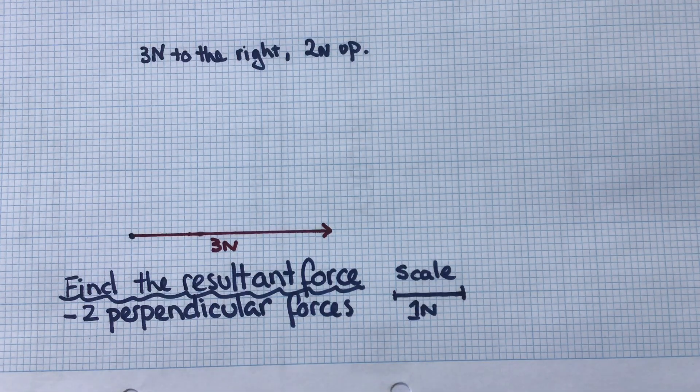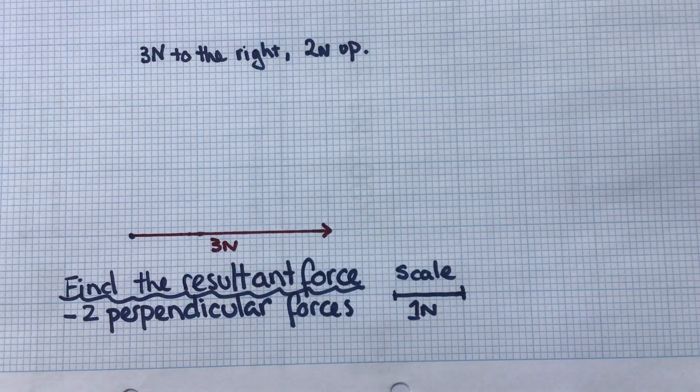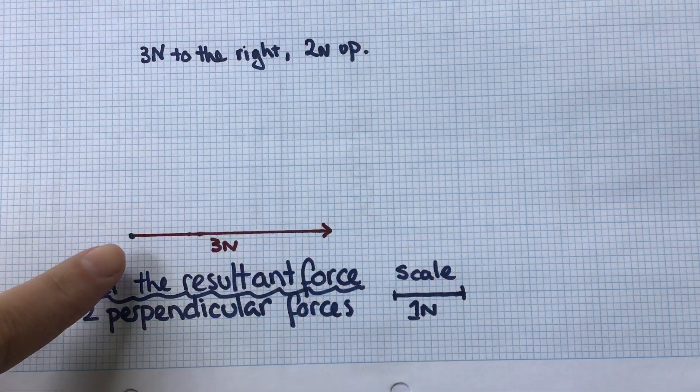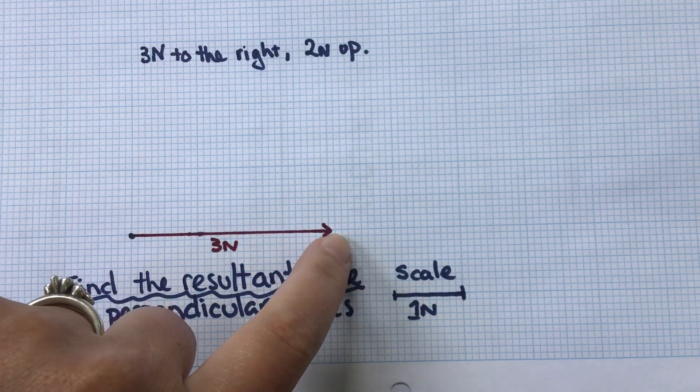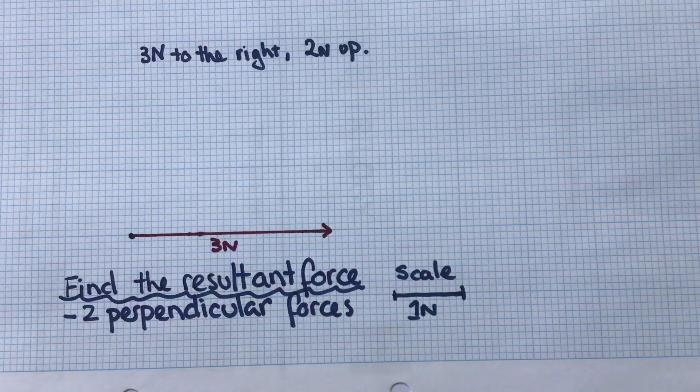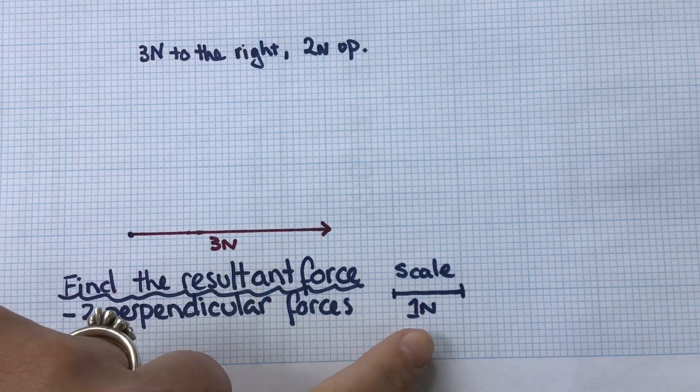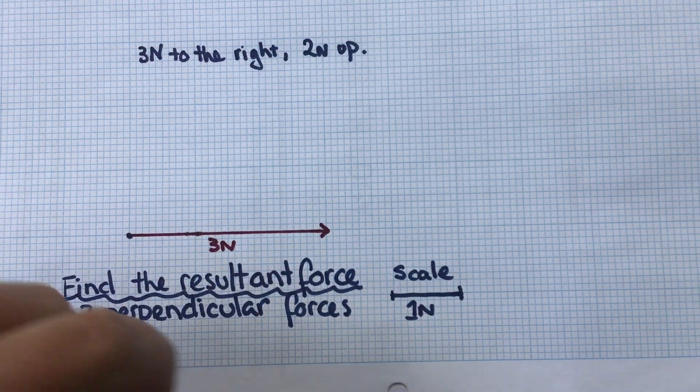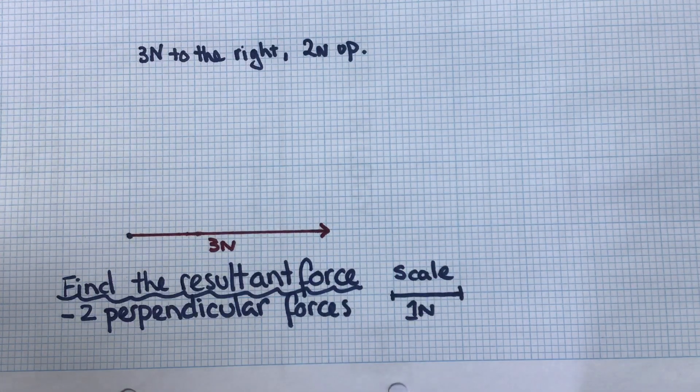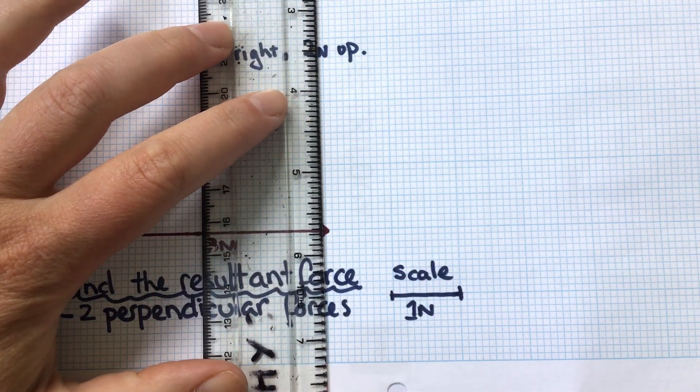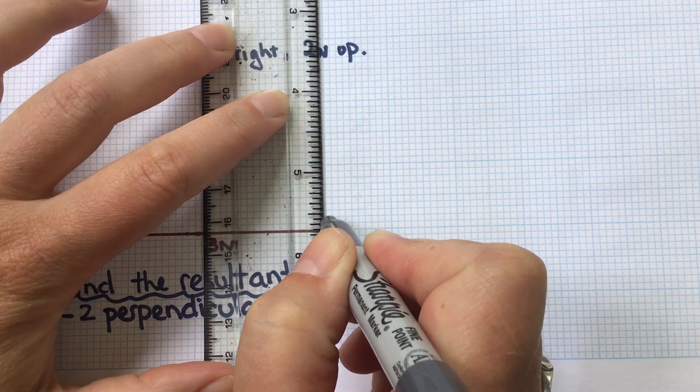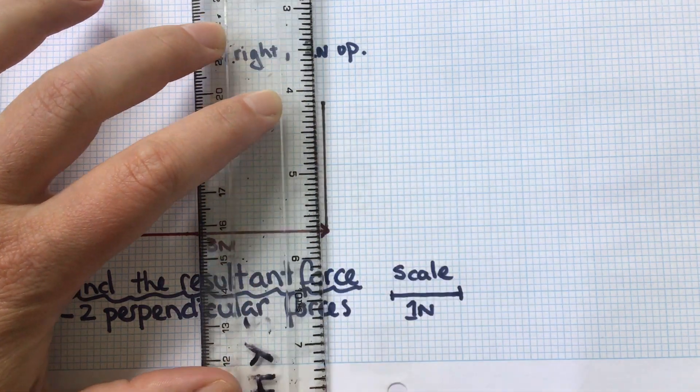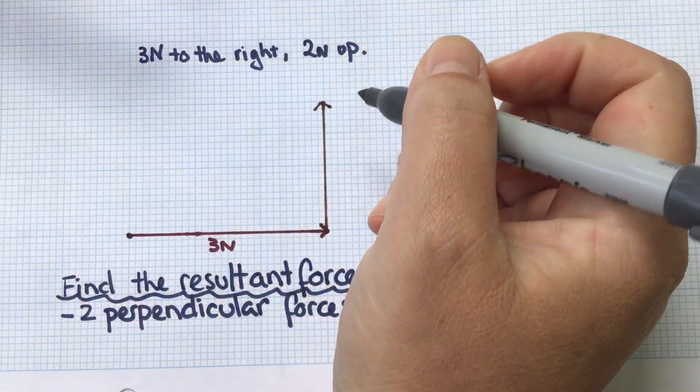Then I have to draw my 2 newton force up, but I start with the base of the new vector arrow from the tip of the previous vector arrow. So I'm going to start my next arrow from the tip of this arrow. I need to go 2 newtons up on my scale—that is going to be two large boxes. I'm going to go up to there, put my arrow head on to show it's a vector. This is 2 newtons.